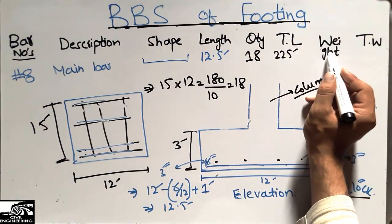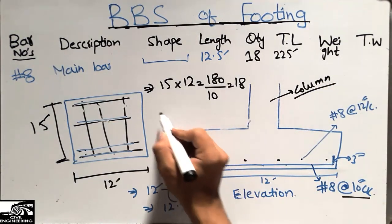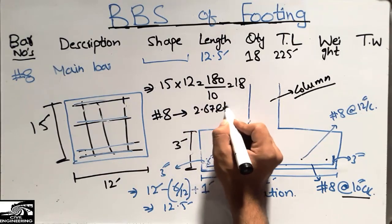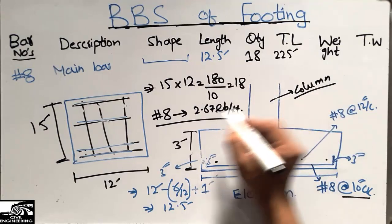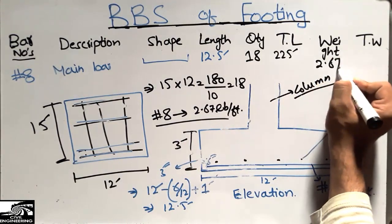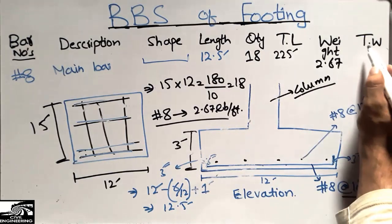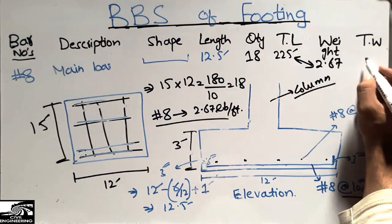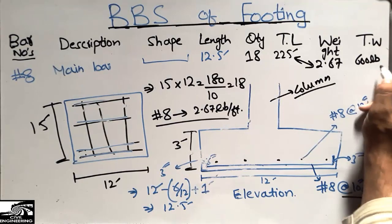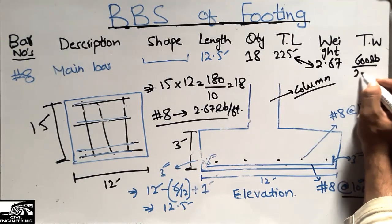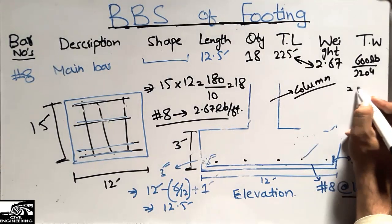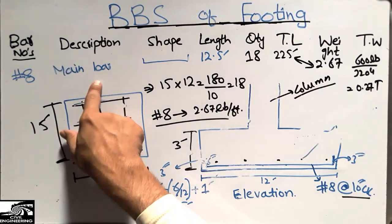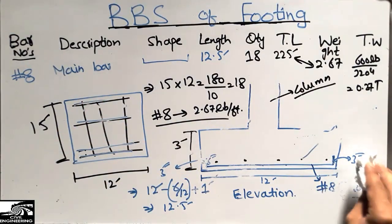To find the weight: the unit weight of a number 8 bar is 2.67 pounds per foot. Multiplying the total length of 225 foot by 2.67 pounds per foot gives approximately 600 pounds. To convert into tons, we divide by 2,204, giving 0.27 tons. So 0.27 tons of steel is used in the main bar alone.